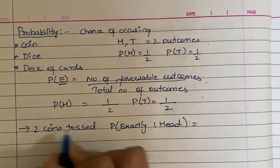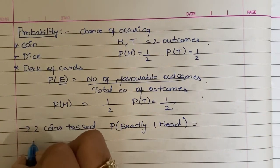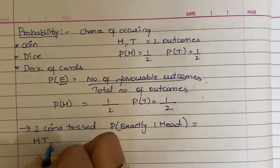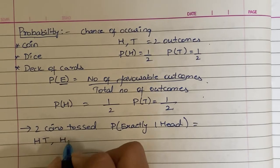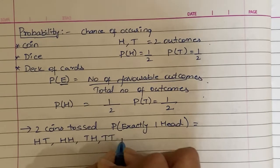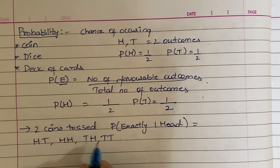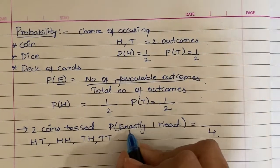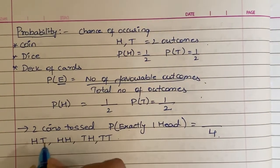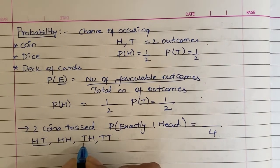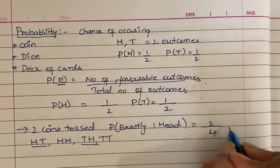When two coins are tossed, the total number of outcomes is 4: head-head, head-tail, tail-head, and tail-tail. We need exactly one head. The favorable outcomes are head-tail and tail-head, so that is 2 out of 4, which equals 1 by 2.